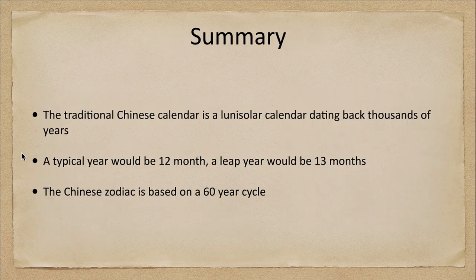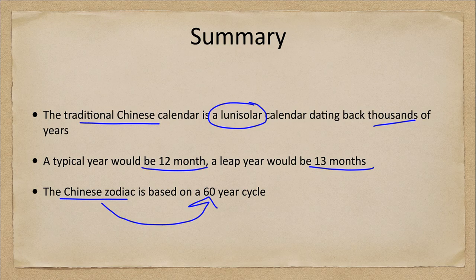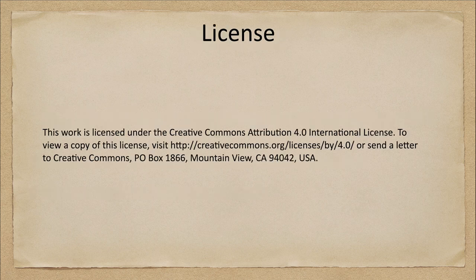So let's finish up with our summary. The traditional calendar was a lunisolar calendar, which dates back thousands of years. The typical year would be 12 months, while a leap year would be 13 months. And we looked at the Chinese zodiac being based on a 60-year cycle. That concludes this lecture on the ancient Chinese calendar. We'll be back again next time for another topic in astronomy of other cultures. Have a great day everyone, and I will see you in class.